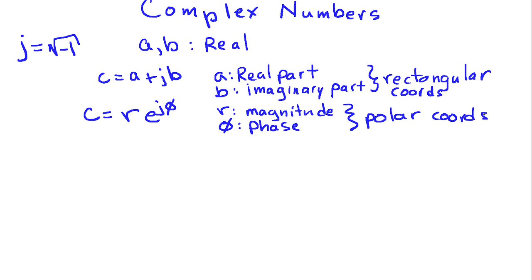Now depending on what kind of operation we're doing with the complex number, it's easier to use rectangular coordinates or polar coordinates. Now before we do a couple operations, let's examine these numbers, these representations, and how to convert between them.